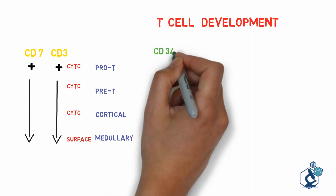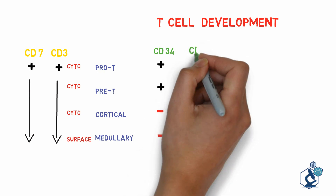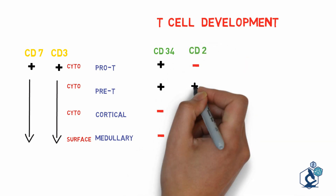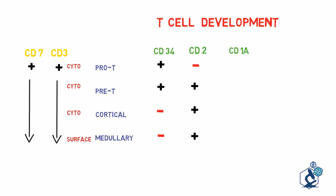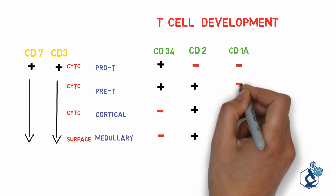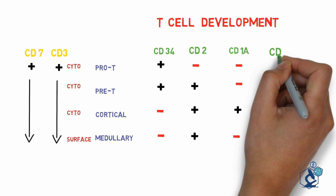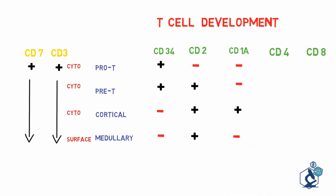CD34 is lost after the pre T stage. CD2 appears from the pre T stage. CD4 and CD8 expression: if cells show both, it is a cortical T cell. Mature T cells express either CD4 or CD8. A normal mature T cell versus an immature T cell or T lineage blast can be identified by the absence of surface CD3 on immature T cells.